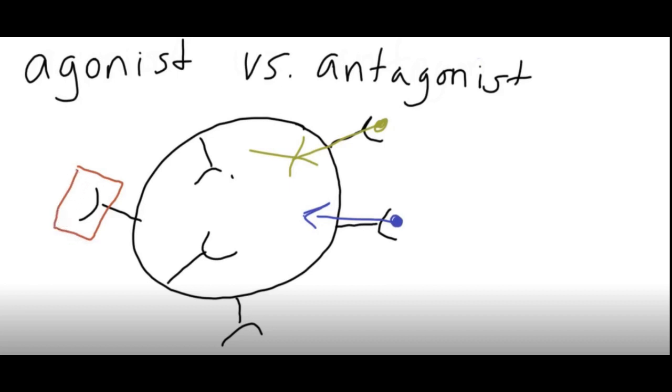The antagonist is going to bind to the receptor and prevent whatever the normal process is from binding. That molecule that normally binds to that receptor on the cell gets blocked by the antagonist. This can happen to both the receptors on the outside and the receptors on the inside of the cell.